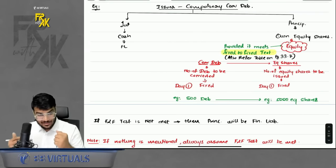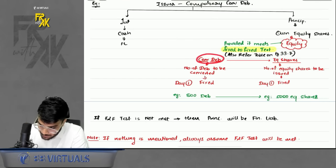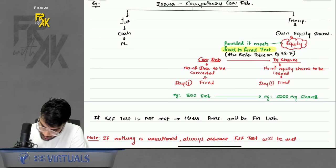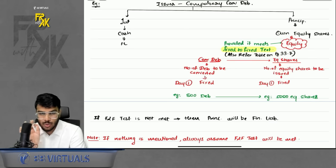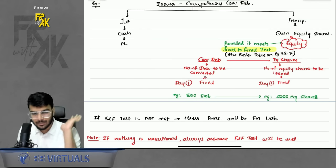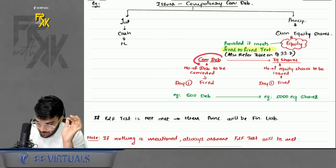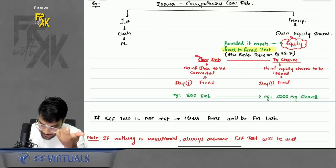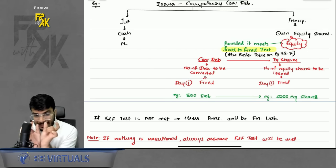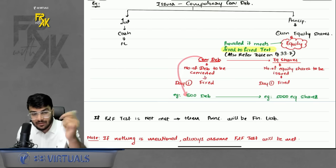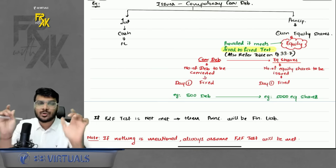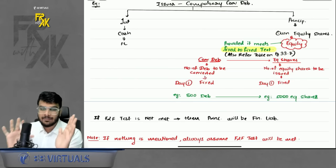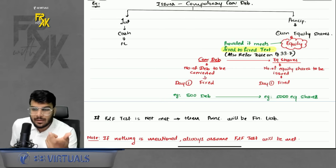What is the fixed-to-fixed test? The number of debentures to be converted should be fixed on day one, and the number of equity shares to be issued should also be fixed on day one. For example, on day one you specify that 500 debentures will convert into 5,000 equity shares. Both numbers — how many debentures convert and how many shares are issued — must be fixed. If both are fixed, the fixed-to-fixed test is met and the element will be equity.